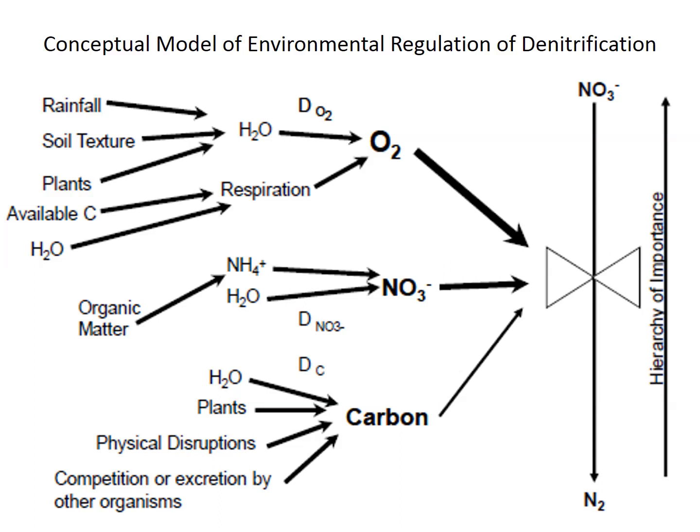When considering how denitrification is regulated and controlled, we think about factors such as oxygen, which is the most profound and limiting factor. Availability of oxygen inhibits denitrification — it is strictly an anaerobic process. Also important is the presence of substrate, specifically NO₃⁻ (nitrate).